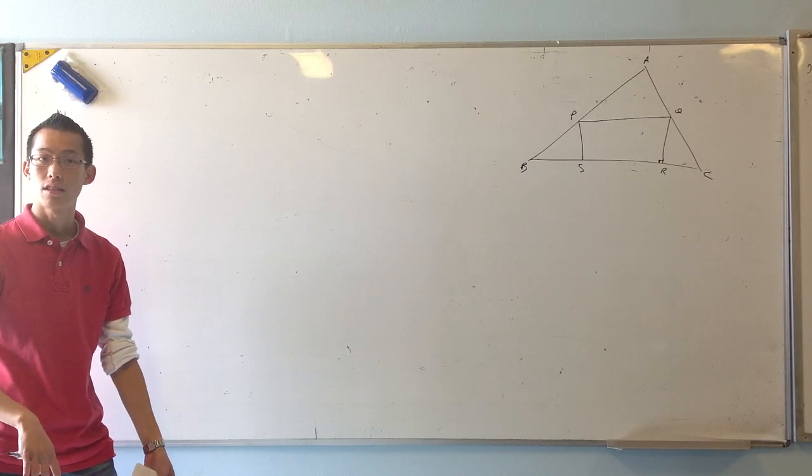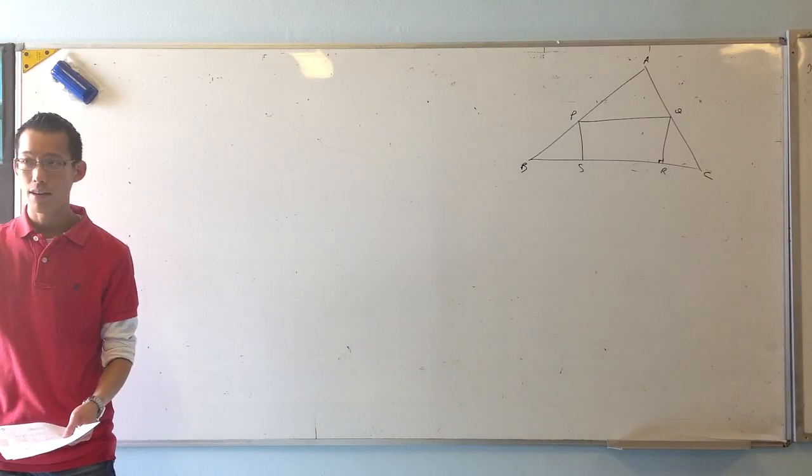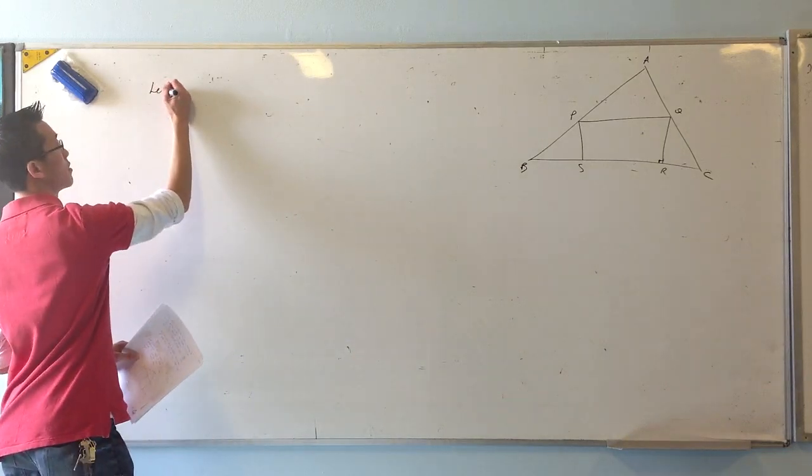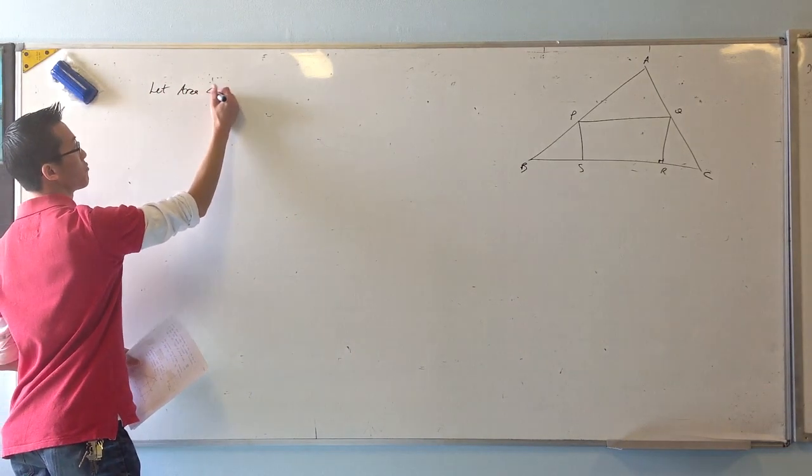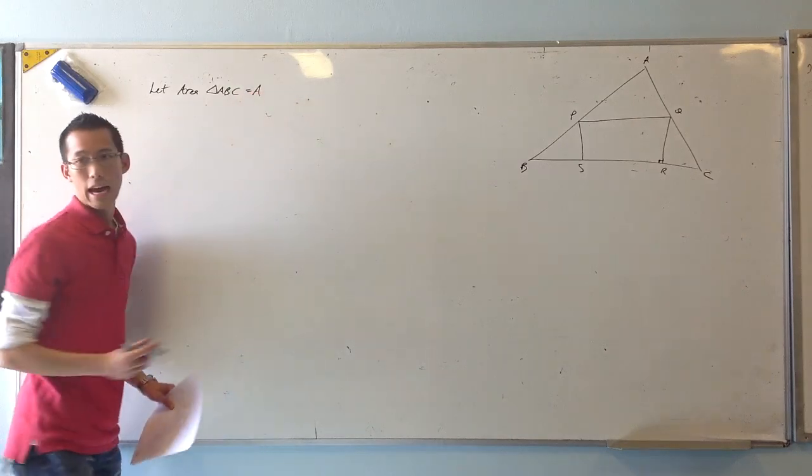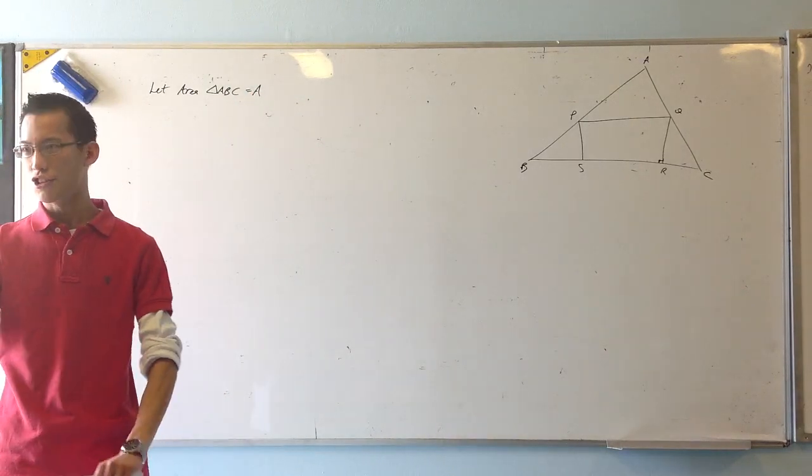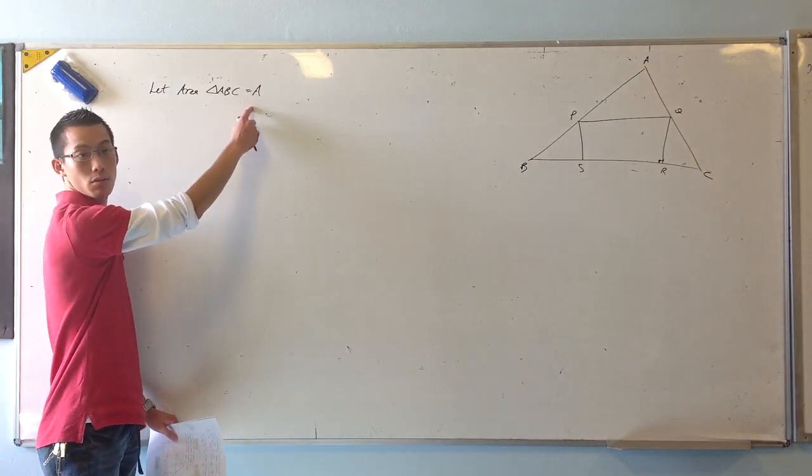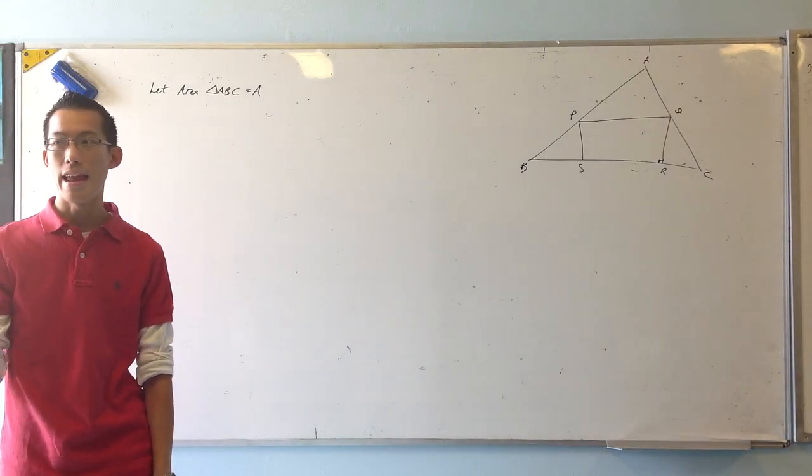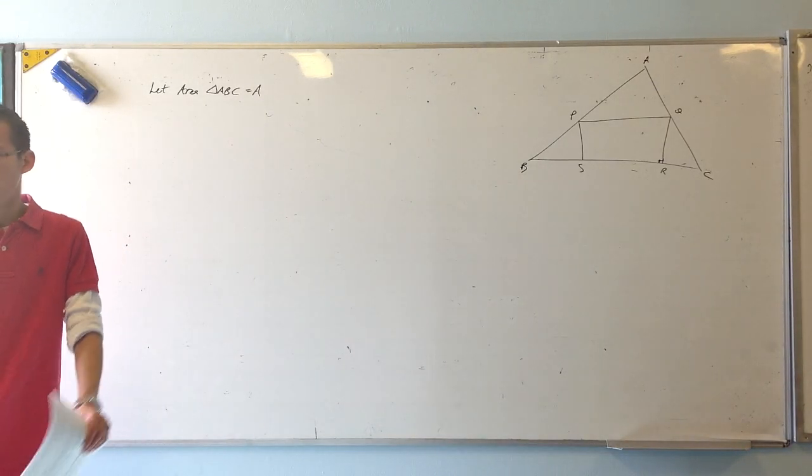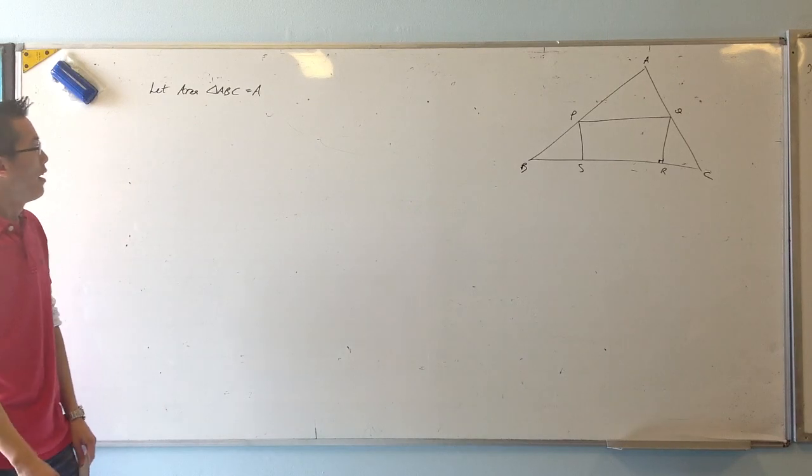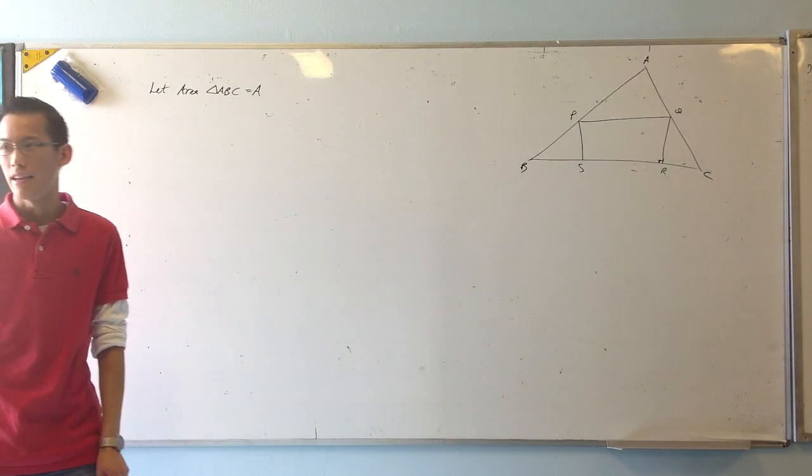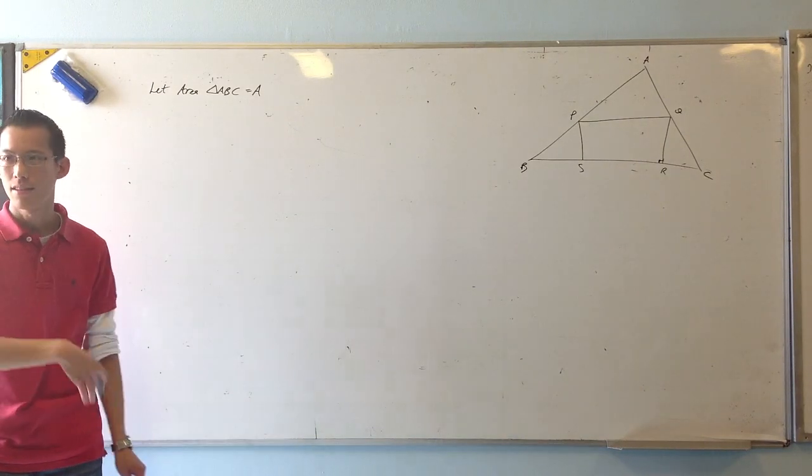To make any start on this, you need to assign some variables and constants. I've picked out four. I've called the area of the whole triangle capital A. Just as a convention, to make things easier for you to solve, we try to make constants capitals, variables lowercase, and angles as Greek letters. That's why you see thetas, alphas, and gammas.